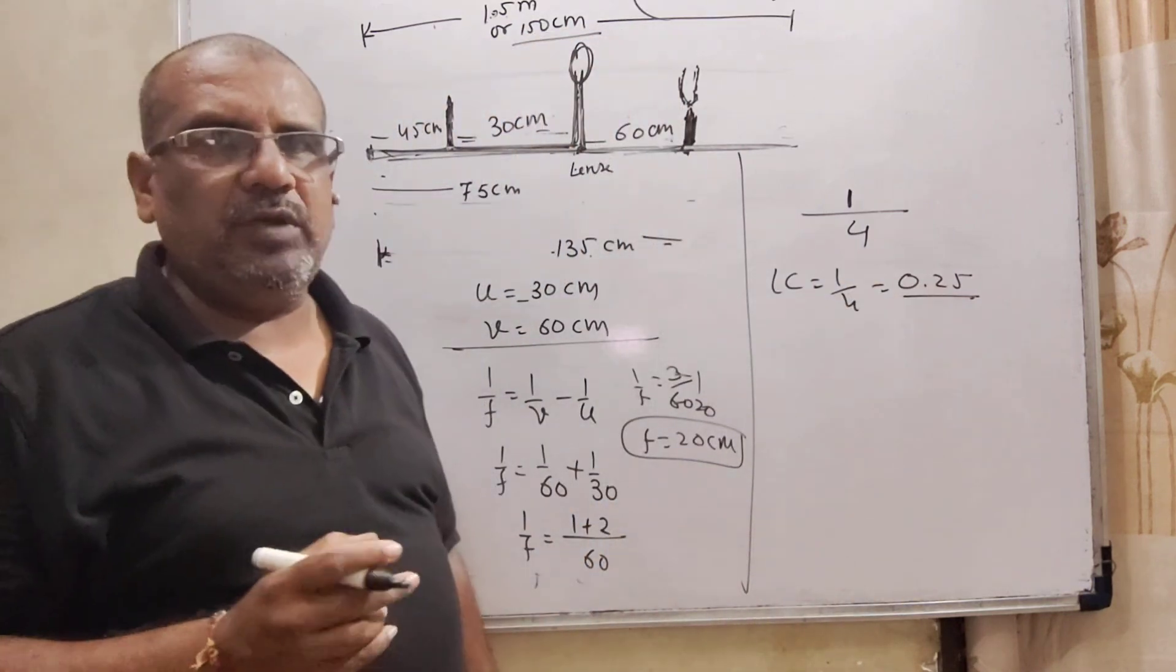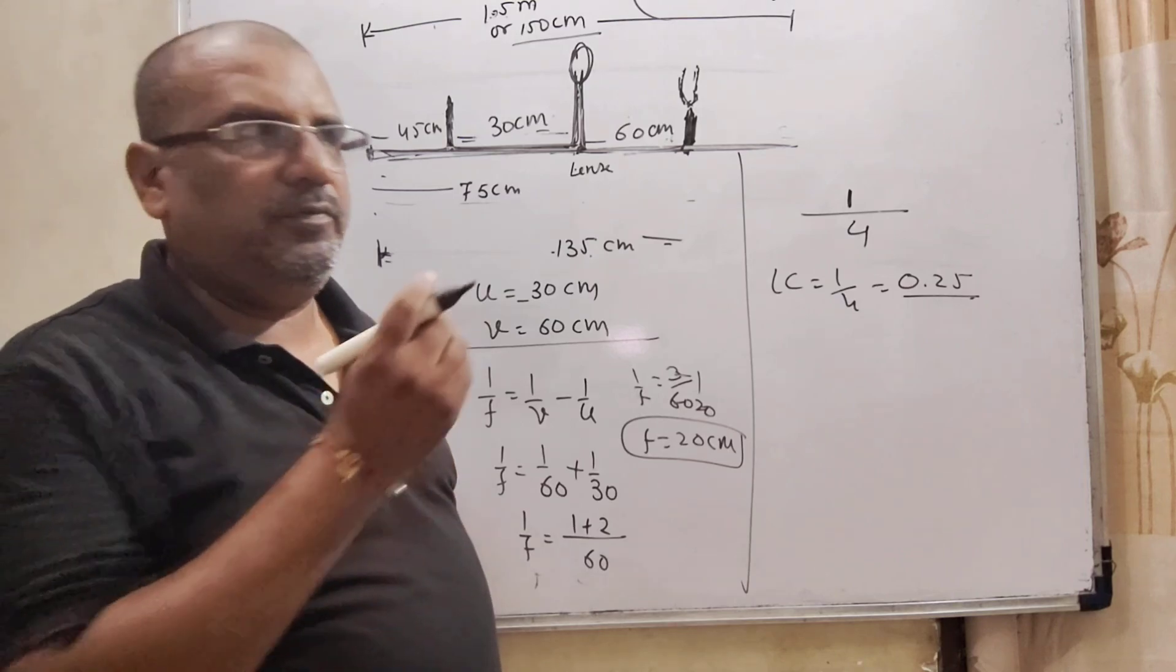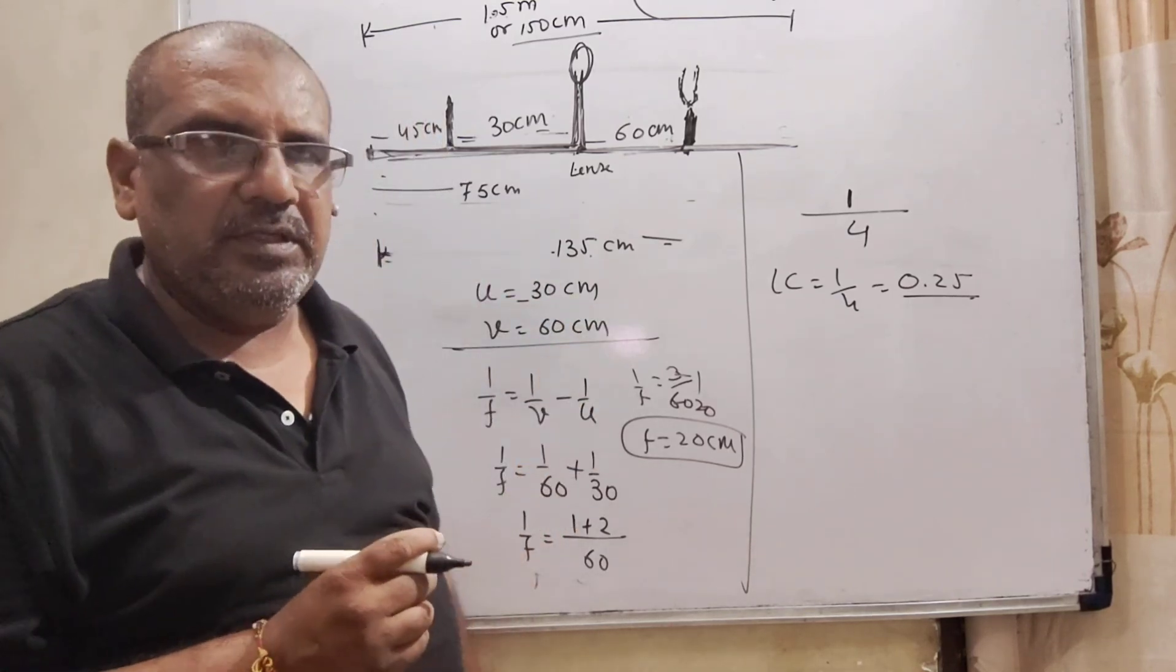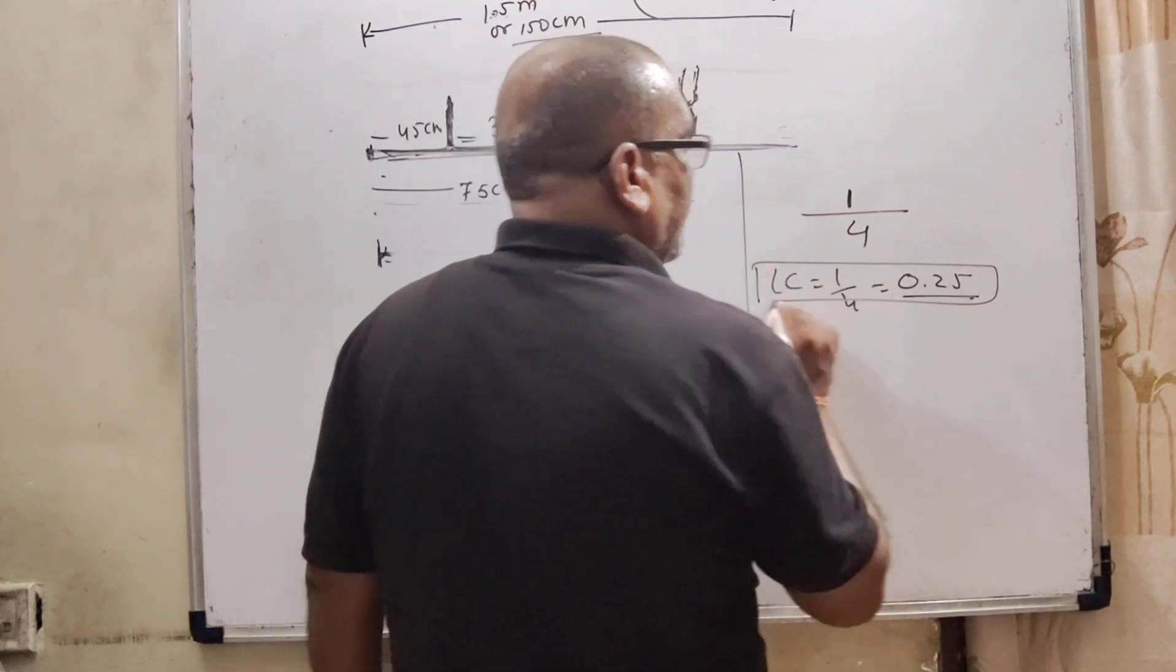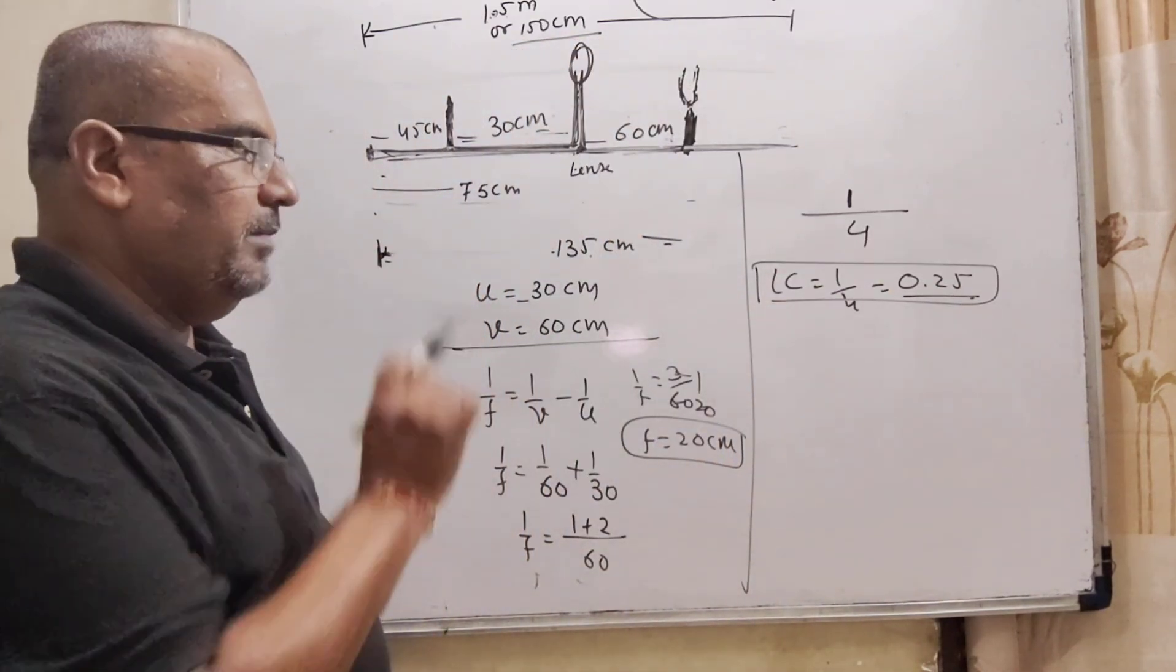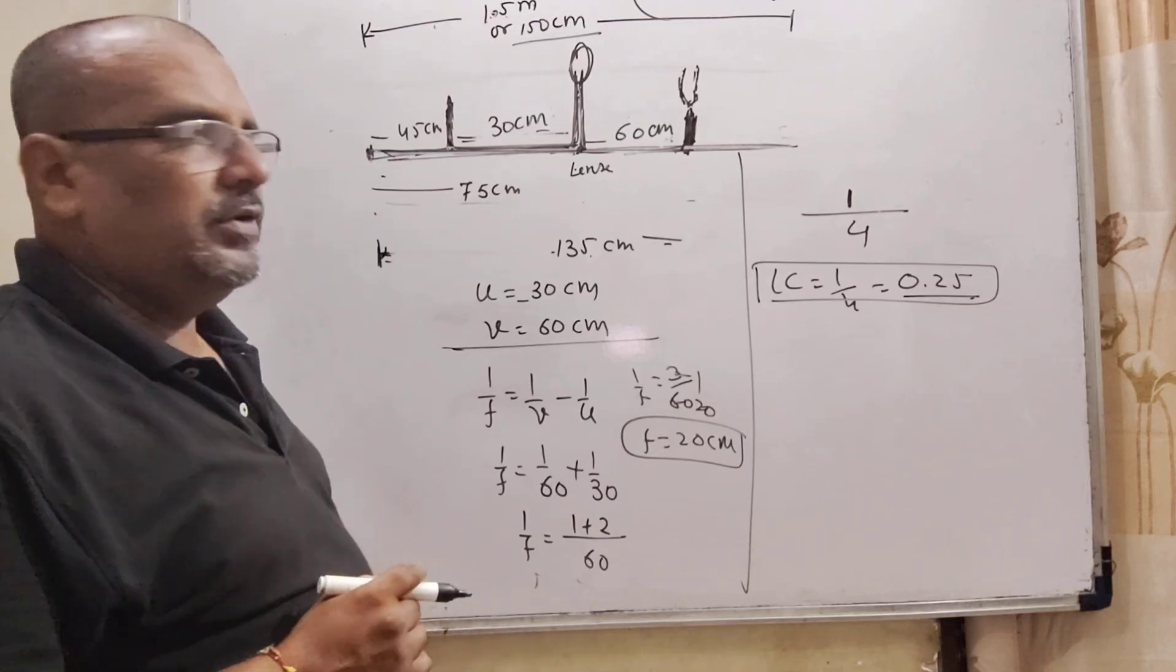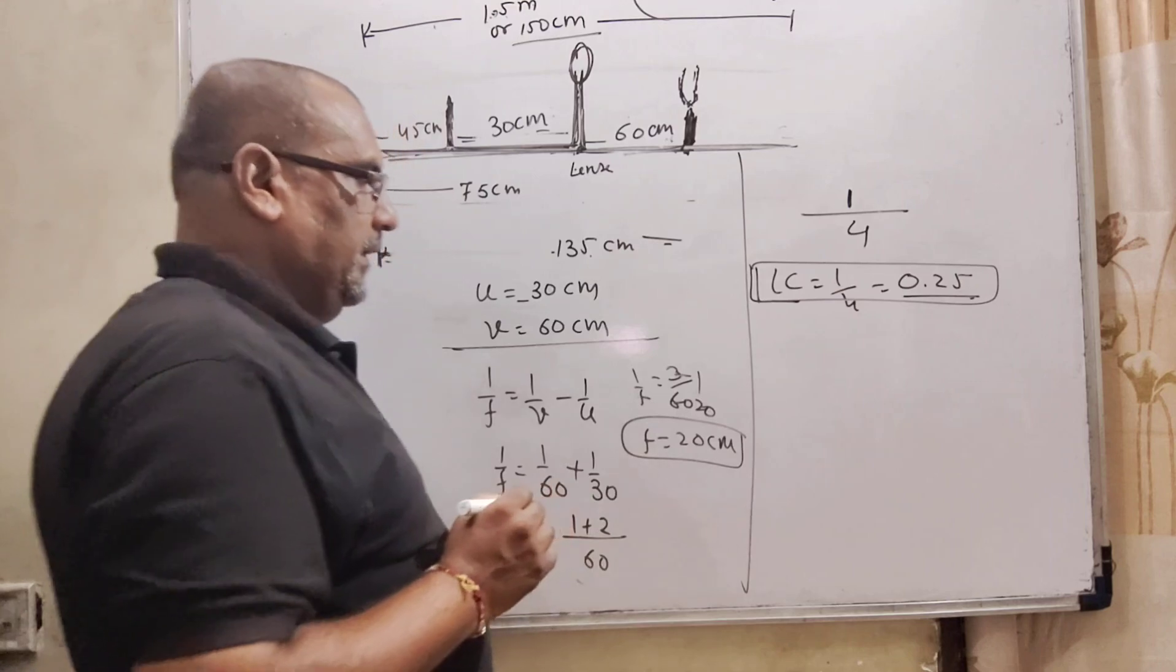As our main scale, you can see that the 10 equal parts divided 1 centimeter, so value of one part is 0.1. Similarly, here, we have given this scale's least count. Is it okay? 1 by 4, 0.25, its value of one part. Now, we have to calculate the percentage error of this focal length.